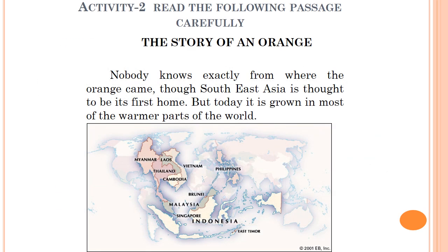Activity 2: read the following passage carefully. The passage is the story of an orange. We are given a story about the fruit orange that we eat — it's a common fruit found everywhere, but where it was initially grown, how it reached all over the world, which are the main countries, what are the different types of oranges, and so on. Now let's read the story. Nobody knows exactly where the orange came from, though southeast Asia is thought to be its first home.